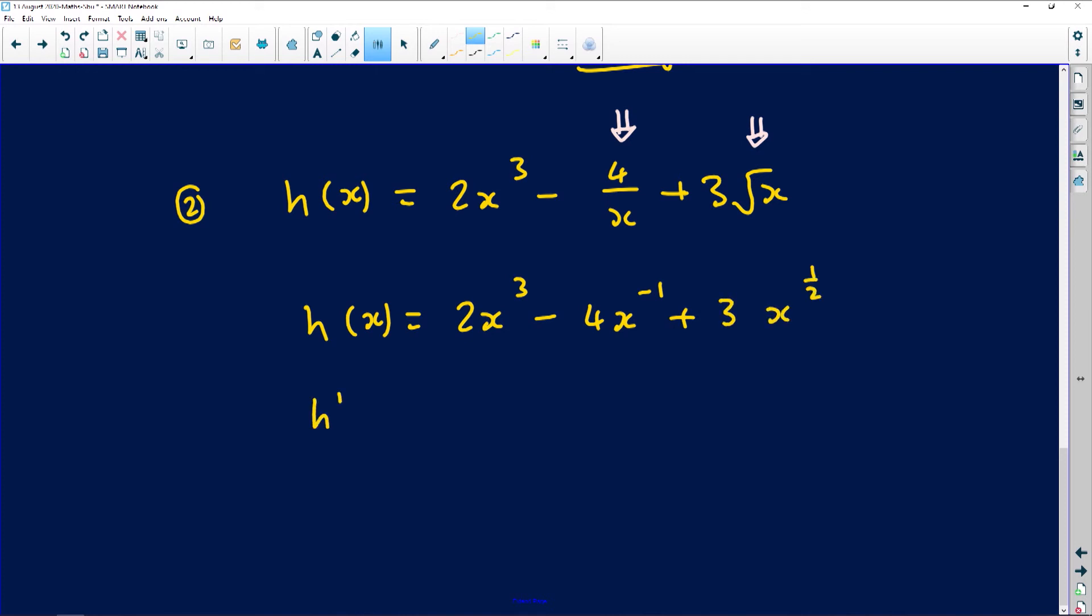Now I'm ready to derive. Then I'm going to derive and say the derivative is 6x squared. Exponent times coefficient gives you 6. Exponent minus 1 gives you 2. Exponent times coefficient gives you plus 4. Exponent minus 1 gives you minus 2. Half of 3 gives you 3 halves. x to the power half minus 1, which is going to become minus half.